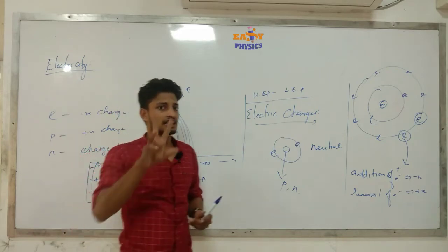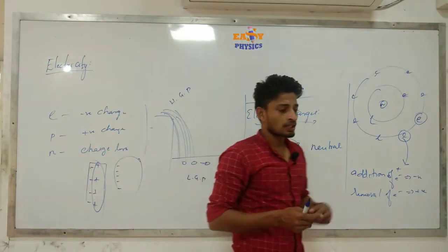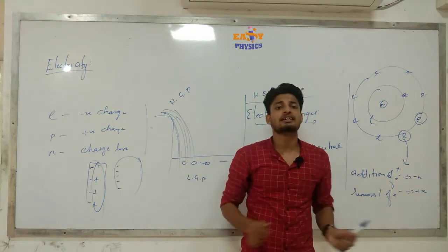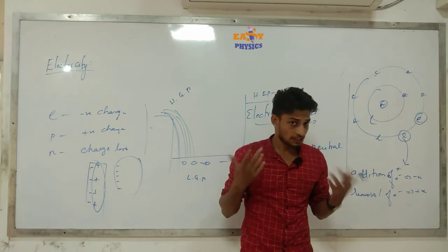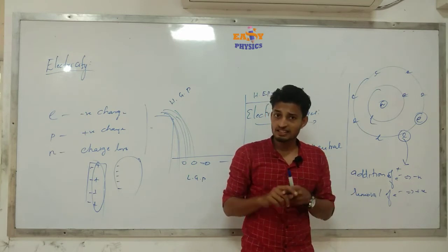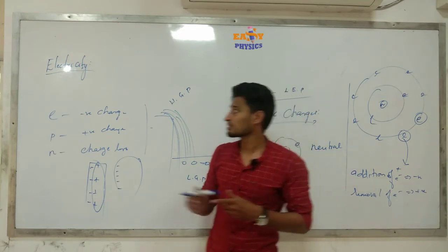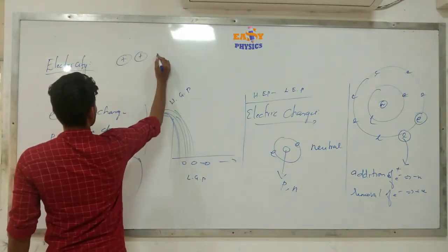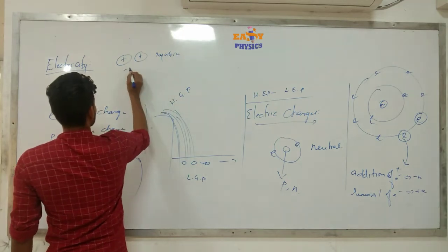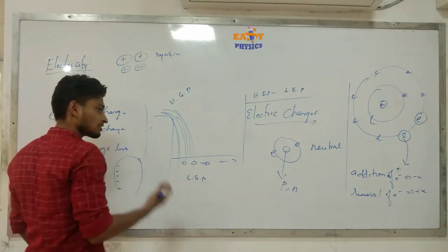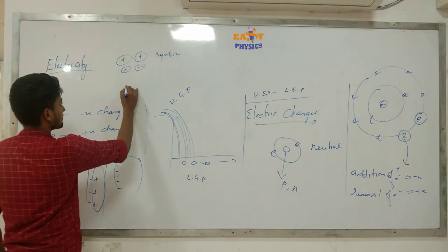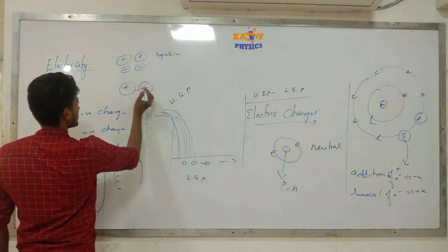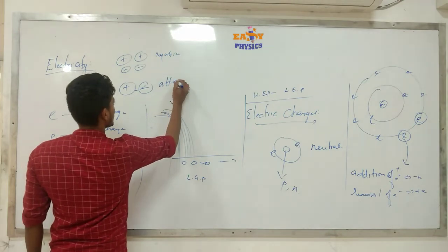Electric force has two types of forces: attractive force and repulsive force. What do we call repulsive force and what do we call attractive force? We will look at these in the next class.